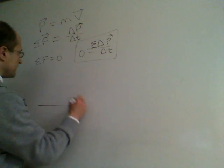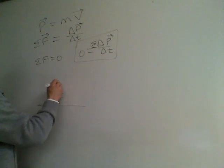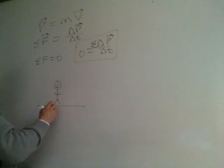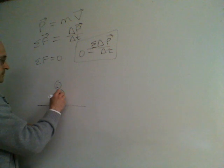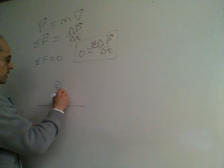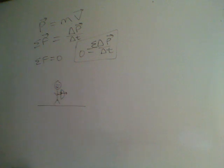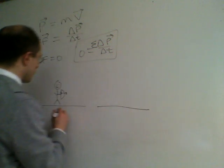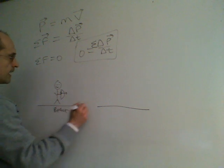Let's say we have somebody standing on some really slick ice, so there's no friction. This person wants to shoot an arrow from their bow. We'll think about what happens before and then after the arrow is shot.